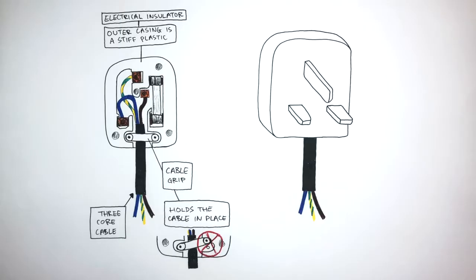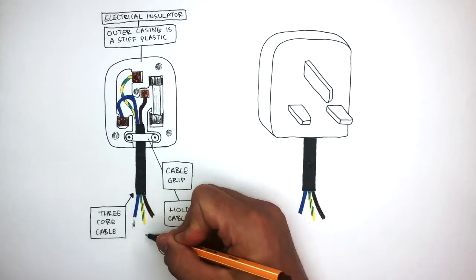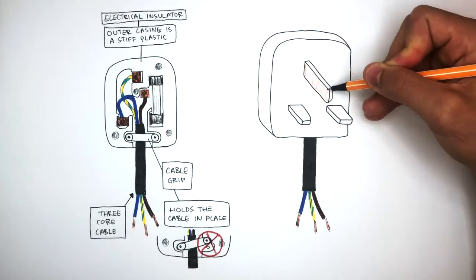This is what the three pin plug looks like on the outside. There are three pins where there's one long pin and two shorter pins. The three core cable contains three wires which contains a copper core, whereas the pins on the plug are made of brass.